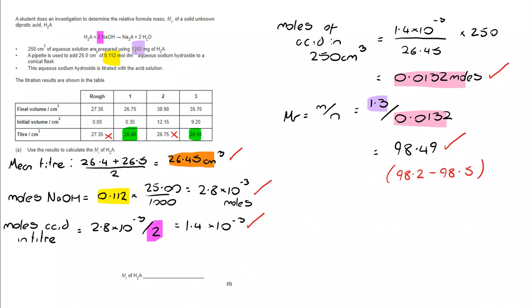The answer was actually accepted anywhere between 98.2 and 98.5. But show your working so you can see how to get to that value.